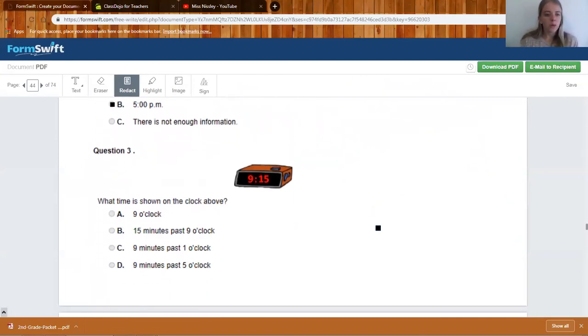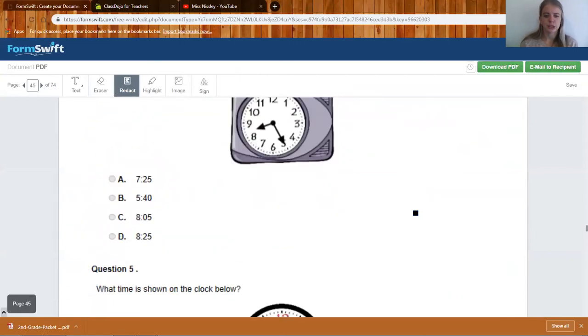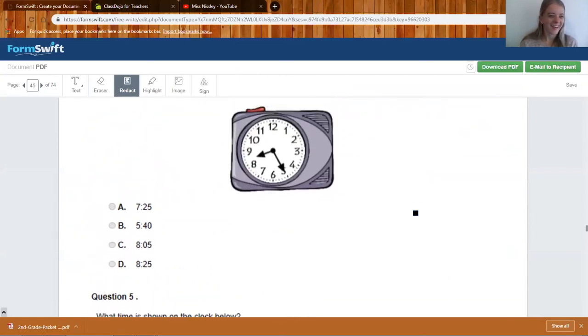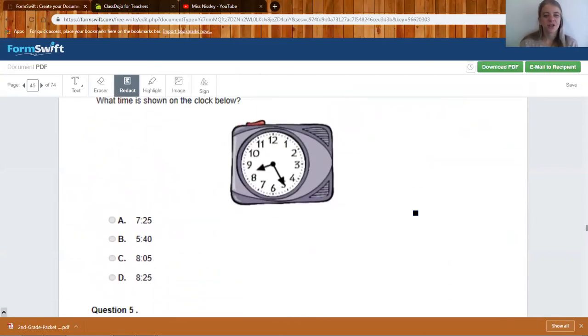Question three. What time is shown on the clock above? Is it 15 minutes past nine o'clock? Oh, I just gave you the answer. It is 15 minutes past nine o'clock. Mrs. Leslie's never done that before, right?